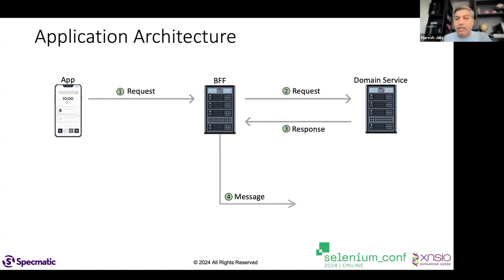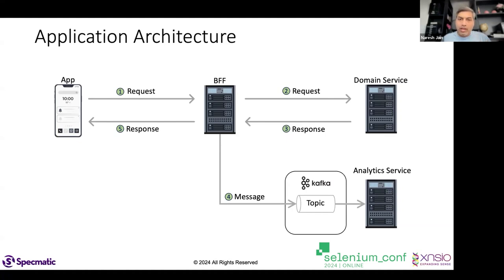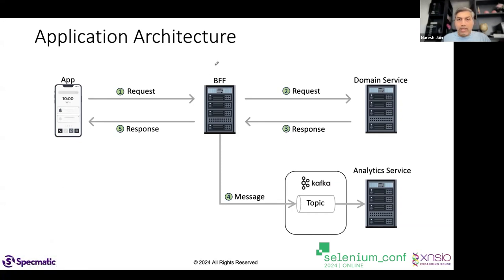The BFF does some business logic and posts a message on a Kafka topic so an analytics service can pick it up, then gets the response back to the application. This is a very simple application but there are a lot of things that can actually go wrong. I want you to think about this BFF layer from a resiliency point of view.